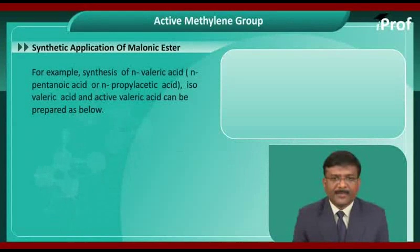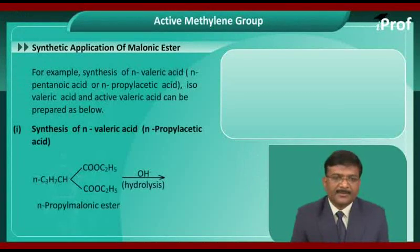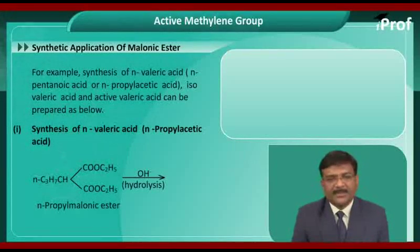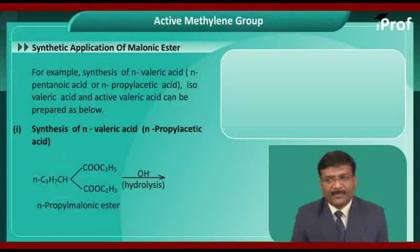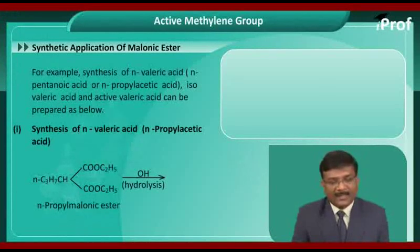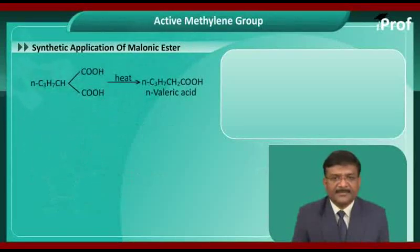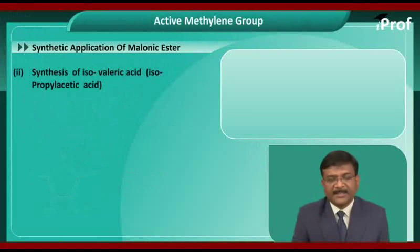For example, synthesis of normal valeric acid or N-valeric acid or isovaleric acid. Now we will see synthesis of N-valeric acid, that is N-propylacetic acid. N-propyl malonic ester, when undergoes hydrolysis, it gives a corresponding dicarboxylic acid, which on further heating gives N-valeric acid.